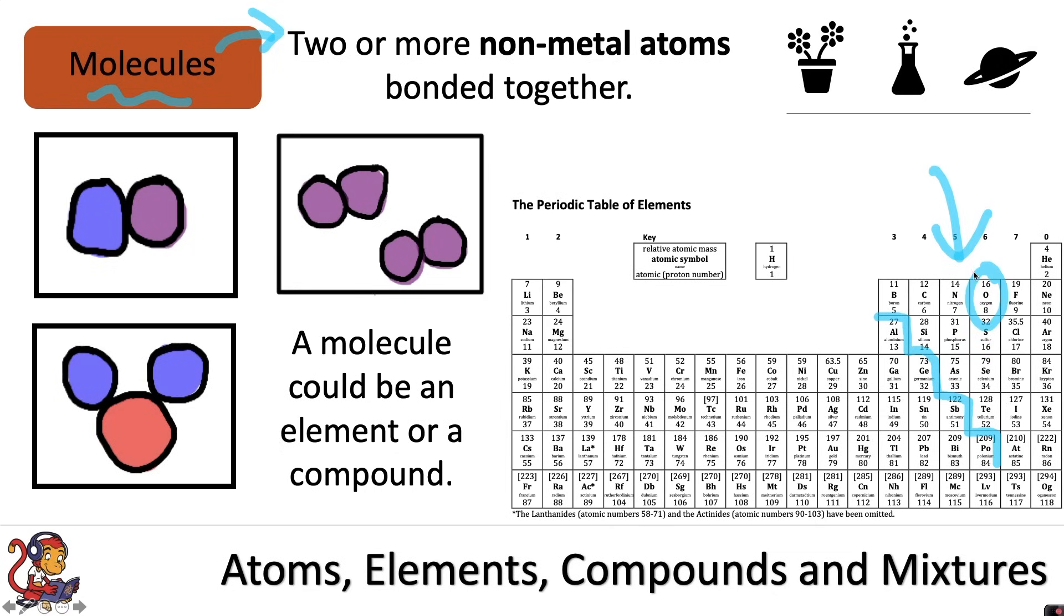So oxygen for example goes around in pairs, O2. So this diagram could be representing two oxygen molecules, one here, O2 and another one here.